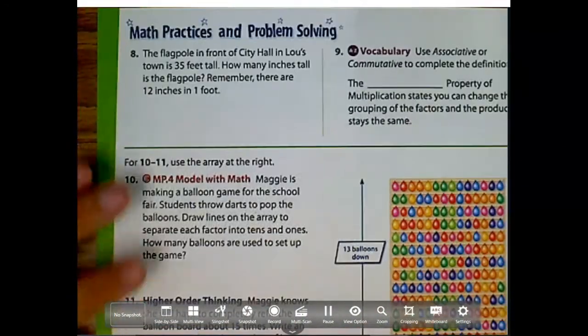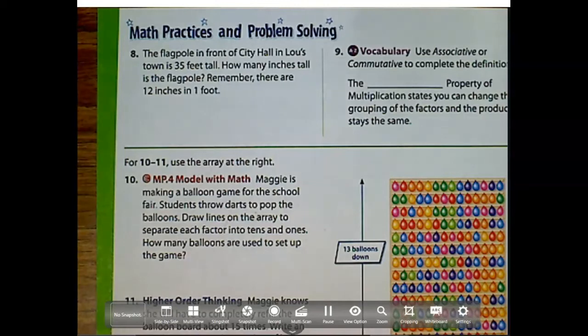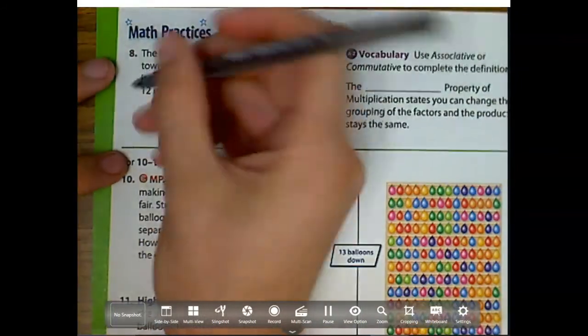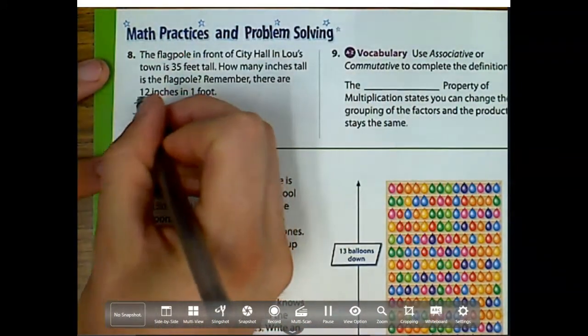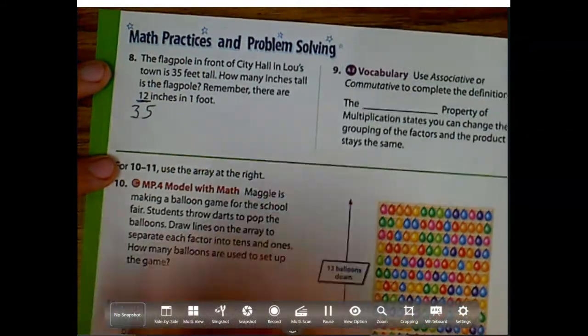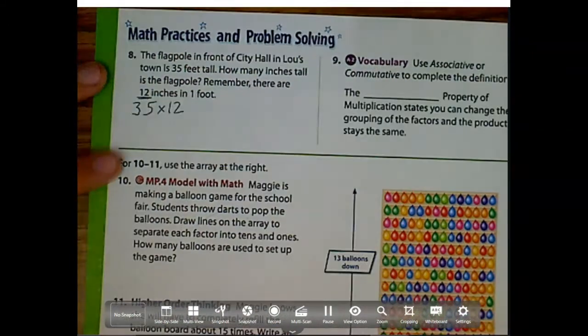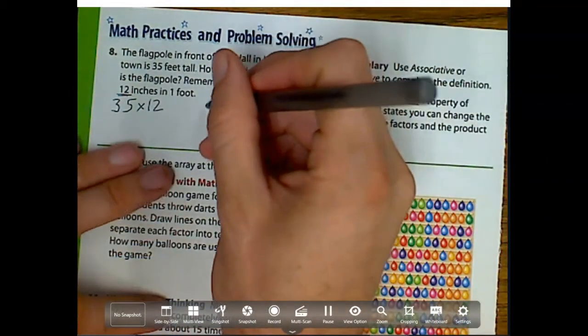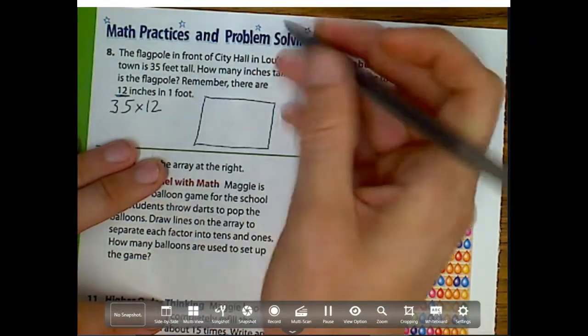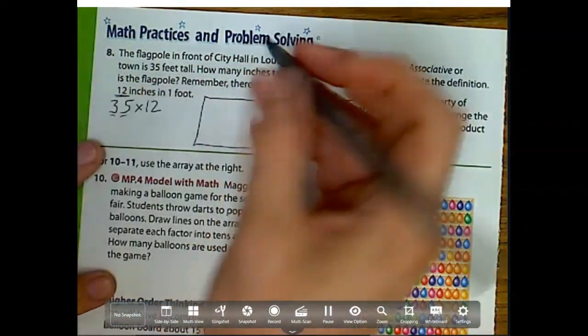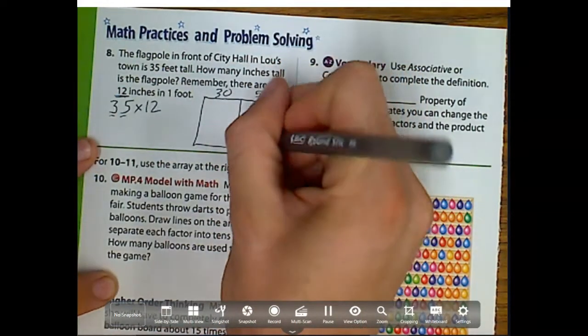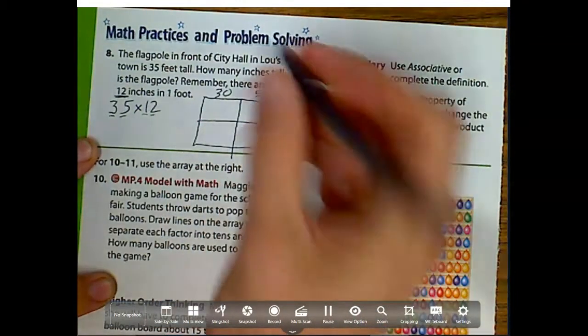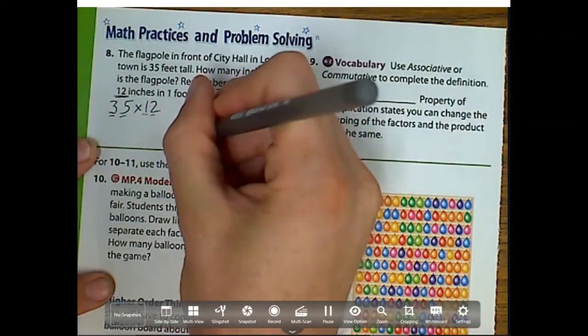The flagpole in front of City Hall in Lou's Town is 35 feet tall. How many inches tall is the flagpole? Remember, there are 12 inches in a foot. Well, this is telling me I have 35 groups, and how big is each group? How big is each foot? It's 12. So that's a multiplication problem. So I have 35 times 12. Now we could do it the standard way, which is the way your parents would probably know how to do it, but we're focusing on array as a partial product. So let's draw that array.